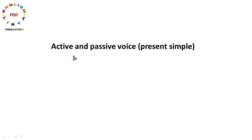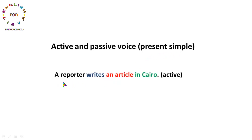قاعدة الدرس هي Active and Passive Voice - المبني للمعلوم والمبني للمجهول في زمن المضارع البسيط Present Simple. عندنا هنا جملة في المضارع البسيط: A reporter writes an article in Cairo. الجملة هذه Active مبني للمعلوم، بمعنى أن الجملة تحتوي على فاعل وفعل ومفعول به.